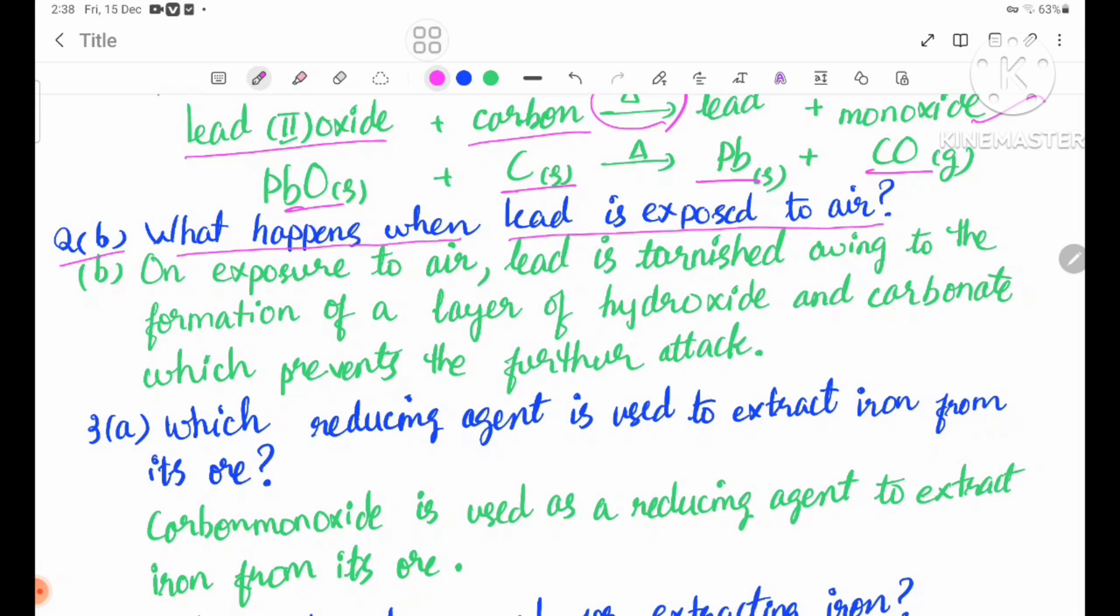On exposure to air, lead is tarnished owing to the formation of a layer of hydroxide and carbonate which prevents further attack.